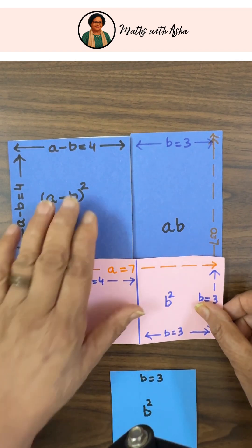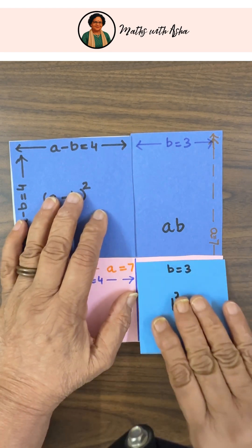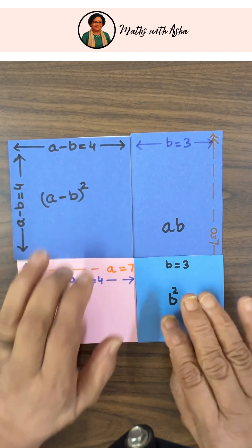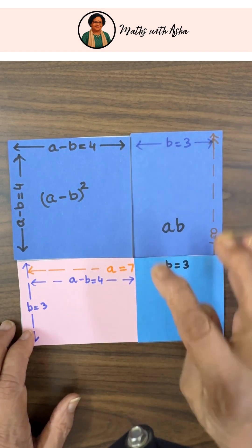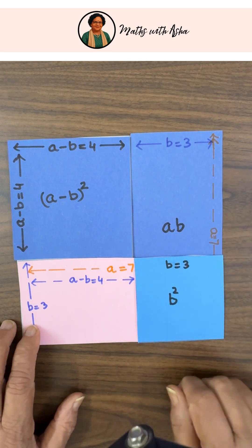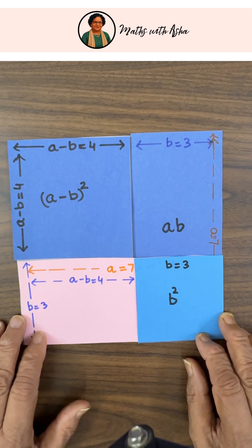But when we subtract 2AB, we are subtracting this portion B square twice, so we have to add B square to it. So what have we got? That A minus B whole square is A square plus B square minus 2AB. And this is precisely what the algebraic formula is.